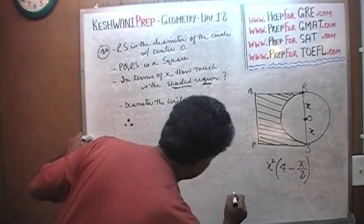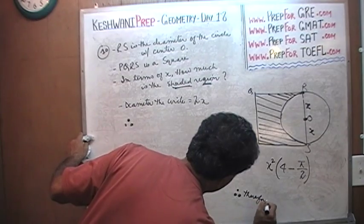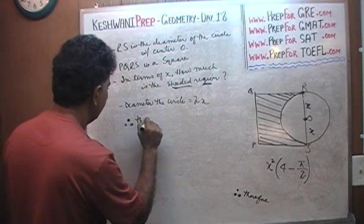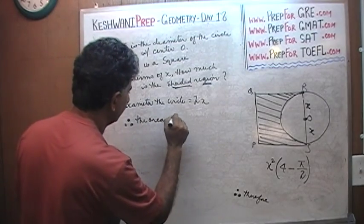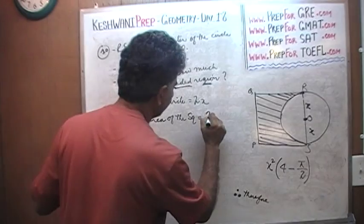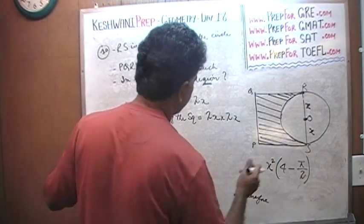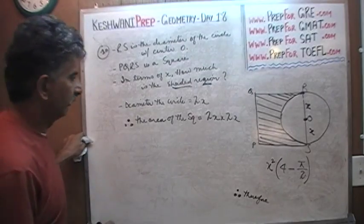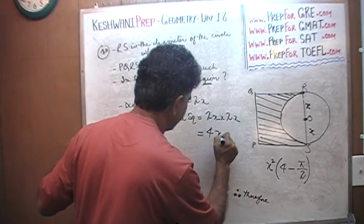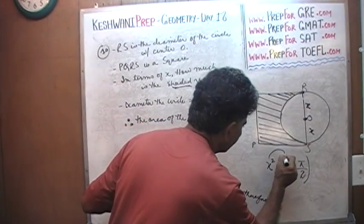For those of you who do not know, this symbol — three dots, two on the bottom and one on top — means 'therefore.' Therefore, the area of the square is 2X times 2X — this side times that side — which gives us 4X squared: 2 times 2 is 4, X times X is X squared. That's where your 4X squared comes from.